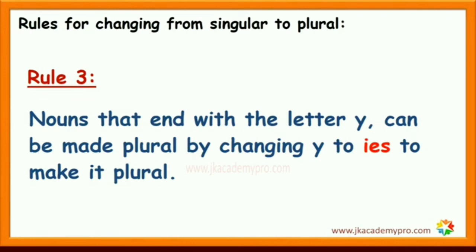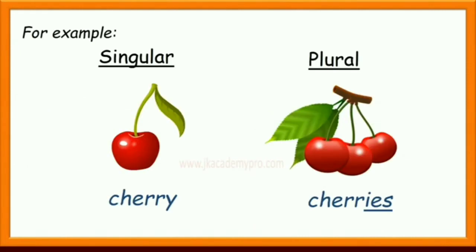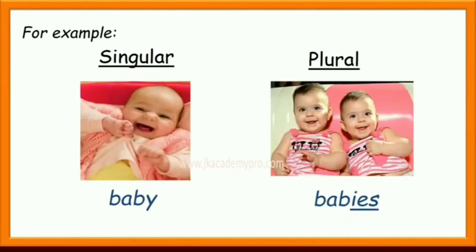Nouns that end with the letter Y can be made plural by changing Y to IES. For example: cherry, cherries; baby, babies. Thank you.